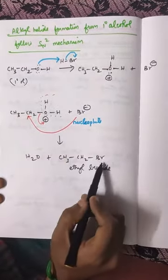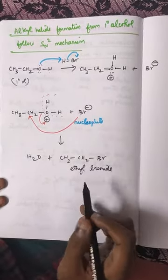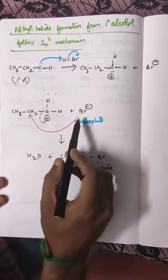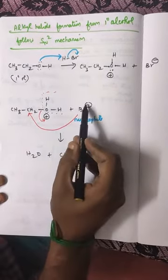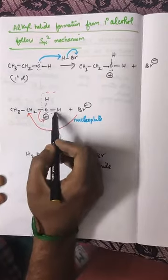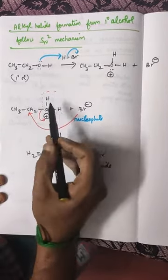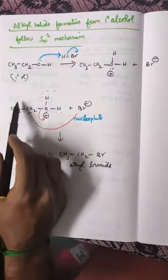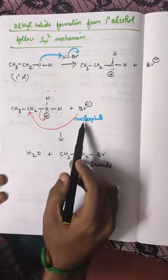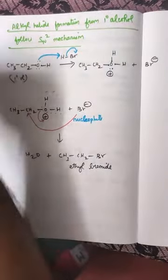Here the OH is replaced by the nucleophile bromine, so it is called nucleophilic substitution reaction. The addition of the nucleophilic bromide ion and the departure of the leaving group take place simultaneously — one bromide ion is added and one water molecule is eliminated at the same time. So the rate of the reaction depends upon both the reactant and the nucleophile; it is called an SN2 reaction.